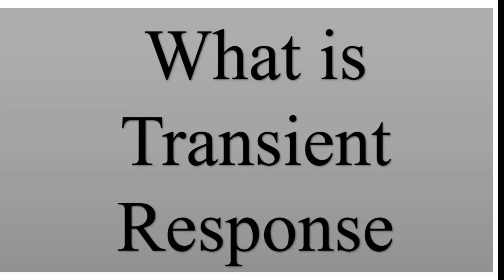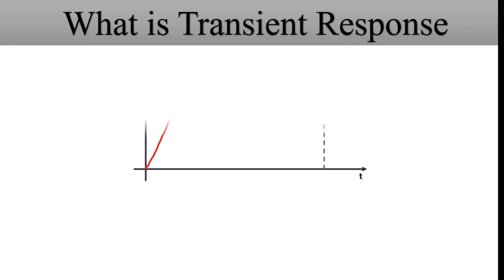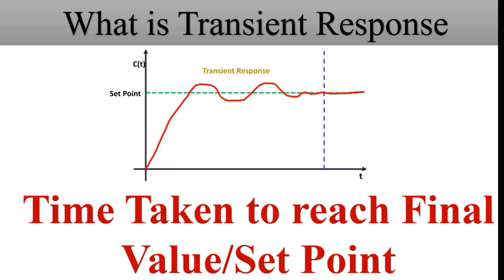The next question: what is transient response? Imagine the output signal of the control system plotted with respect to time, with a set point. Ideally the output should be near the set point. Transient response is the time taken by the control system to reach the final value or the set point. Additionally, transient response reveals the nature of the output and gives the speed of the control system. The transient response vanishes after some time.